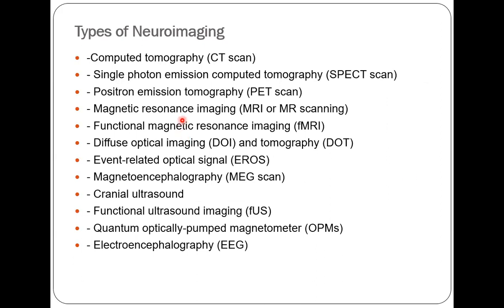There are various types of neuroimaging. For example: computed tomography, SPECT scan, PET scan, MRI, functional MRI, diffuse optical imaging and tomography, event-related optical signal, magnetoencephalography, cranial ultrasound, functional ultrasound imaging, quantum optically pumped magnetometer, and electroencephalography. In this presentation, we will be focusing on CT and MRI.